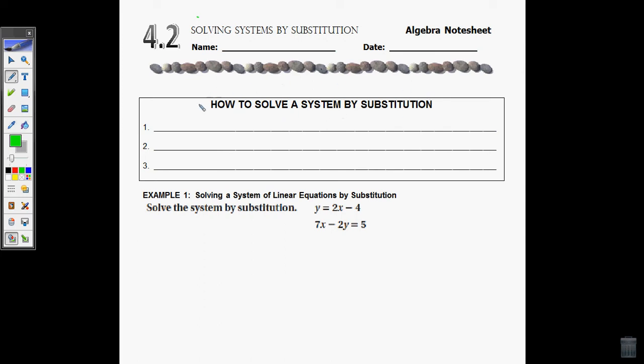Today we're going to be doing a different method, which is substitution, and next time we're going to do another method. But these different methods all do the same thing. We're still looking for that one coordinate point. Sometimes one method is easier than another, depending on your situation.